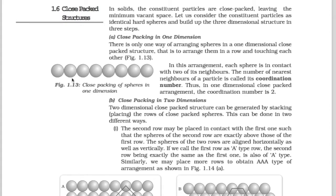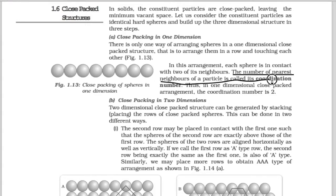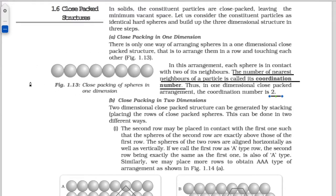The number of nearest neighbours of a particle is called its coordination number. This is very important. Thus, in one dimensional closed packed structure, one particle will be in close contact with two other particles. Therefore, the coordination number in one dimensional closed packing will be 2.